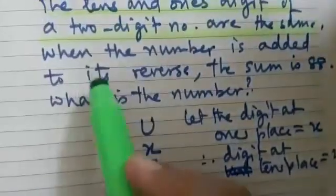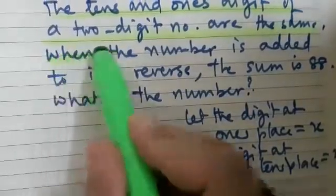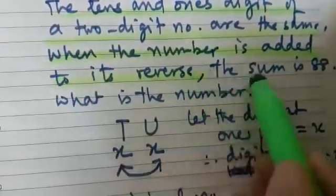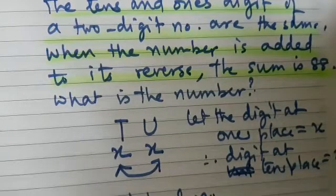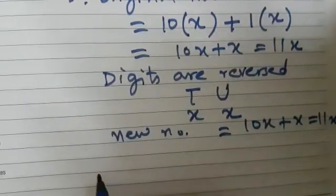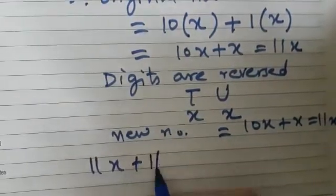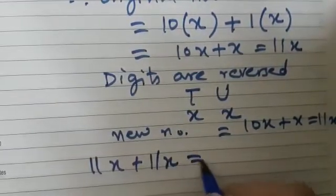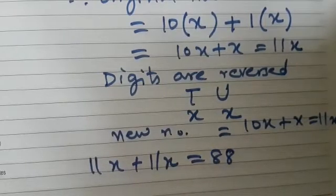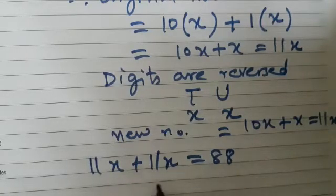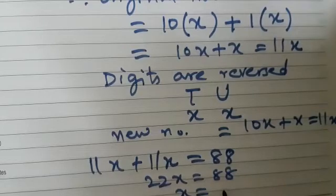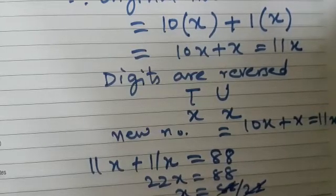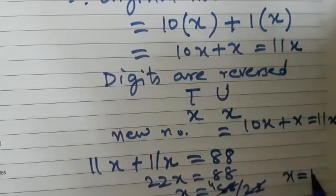Now in this question, it is given that when the number is added to its reverse, the sum is 88. That means if we add 11X plus 11X, we get 88. So you can simplify this. This is a linear equation. So 22X is equal to 88. X gives us 88 by 22. So that means X is equal to 4.